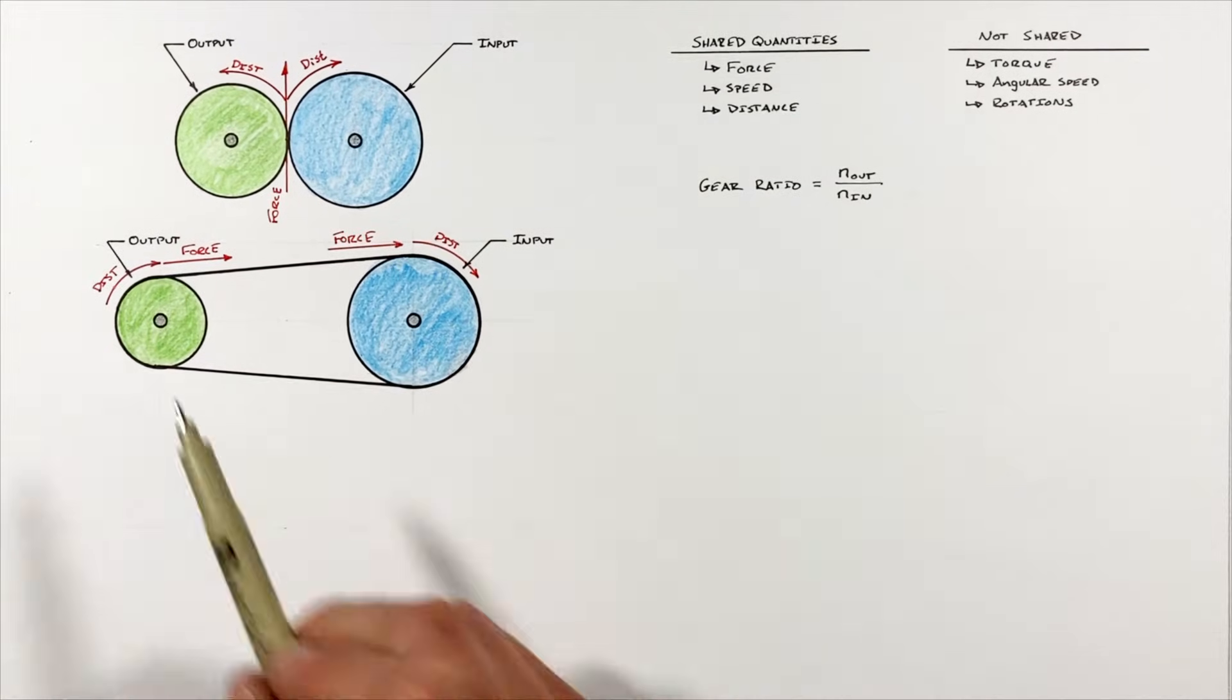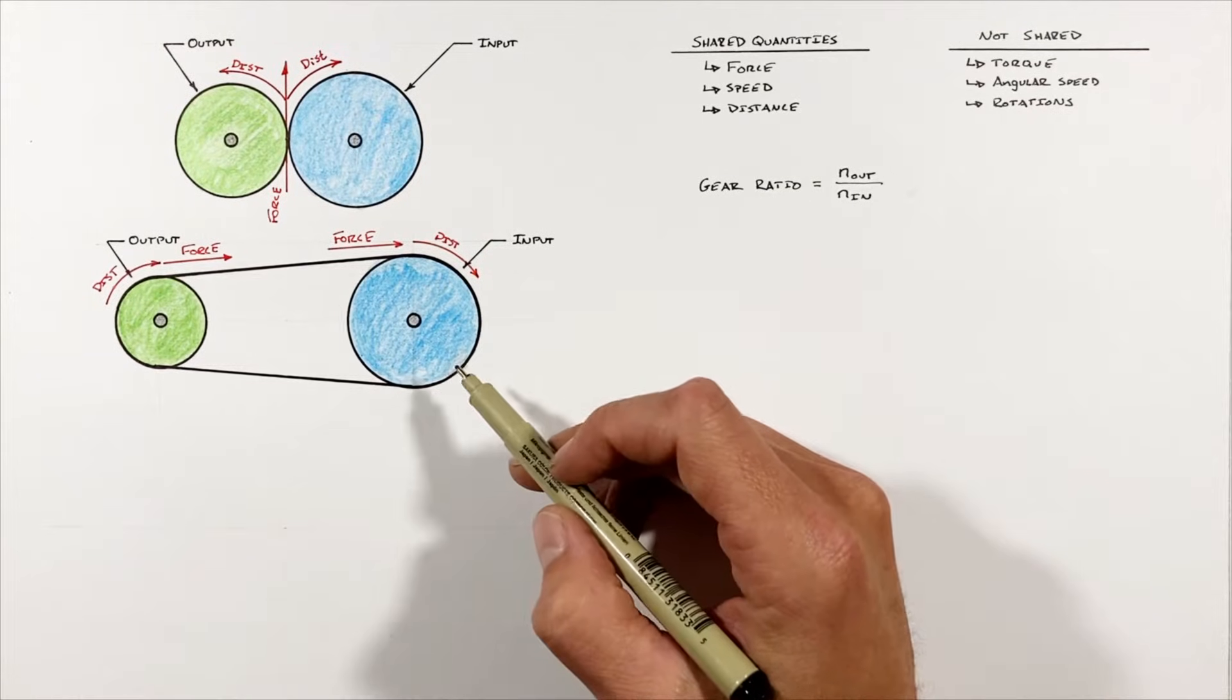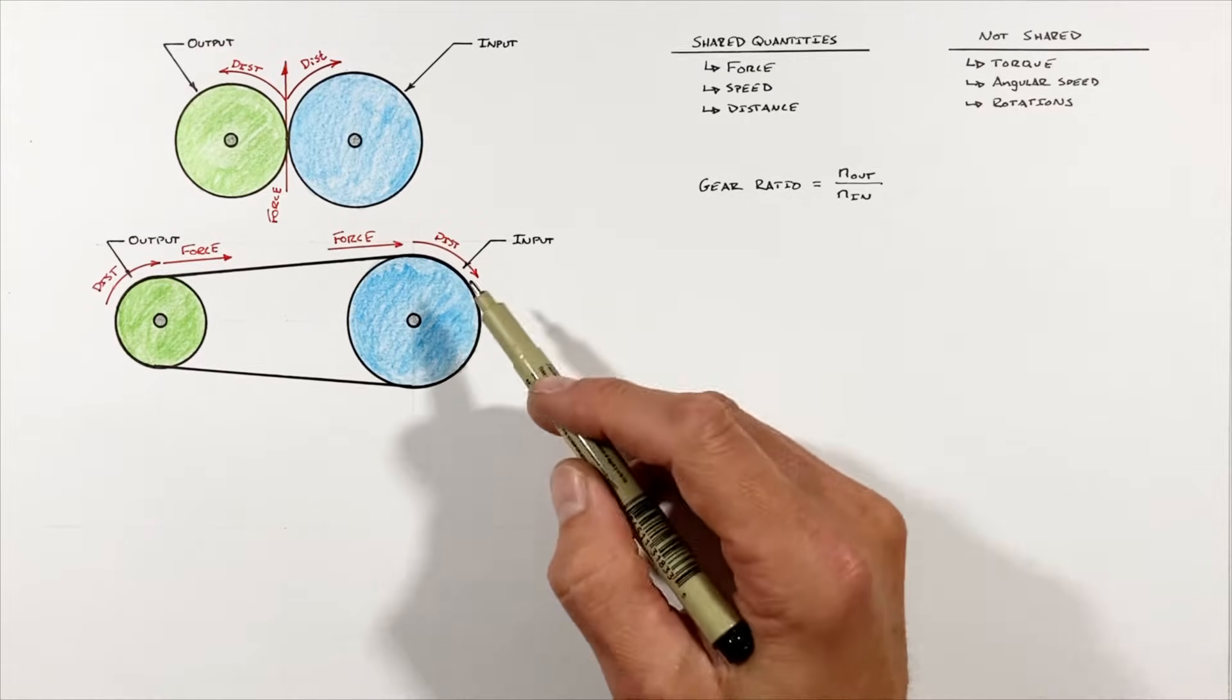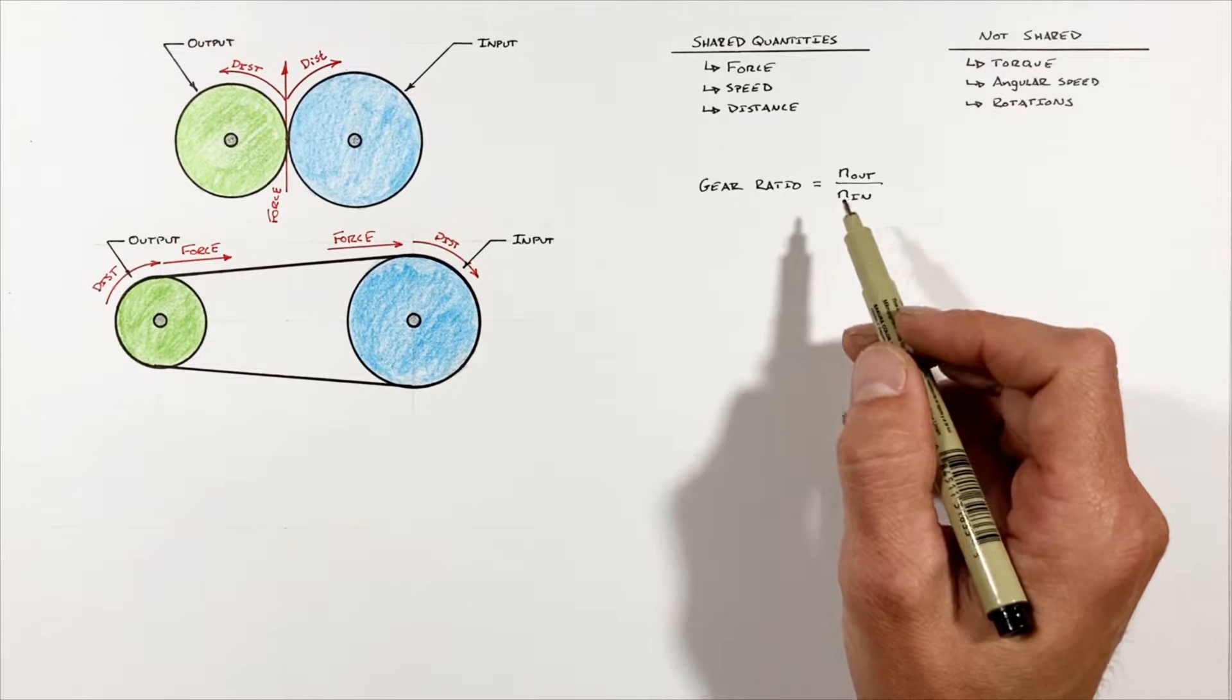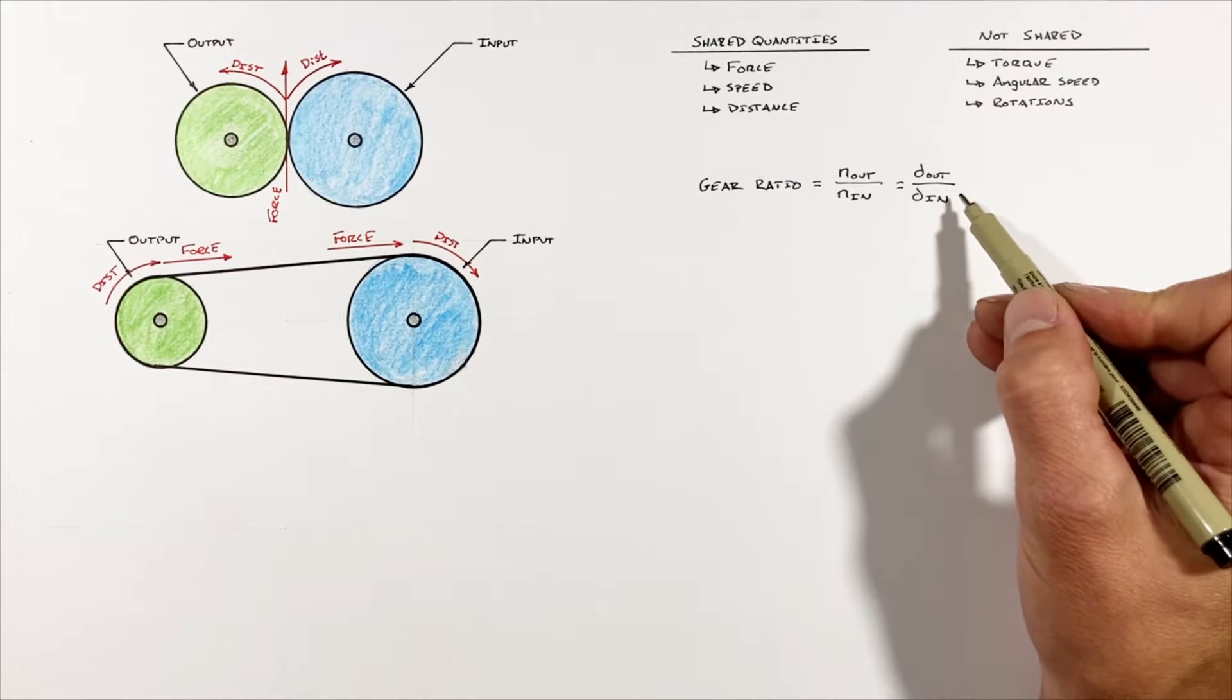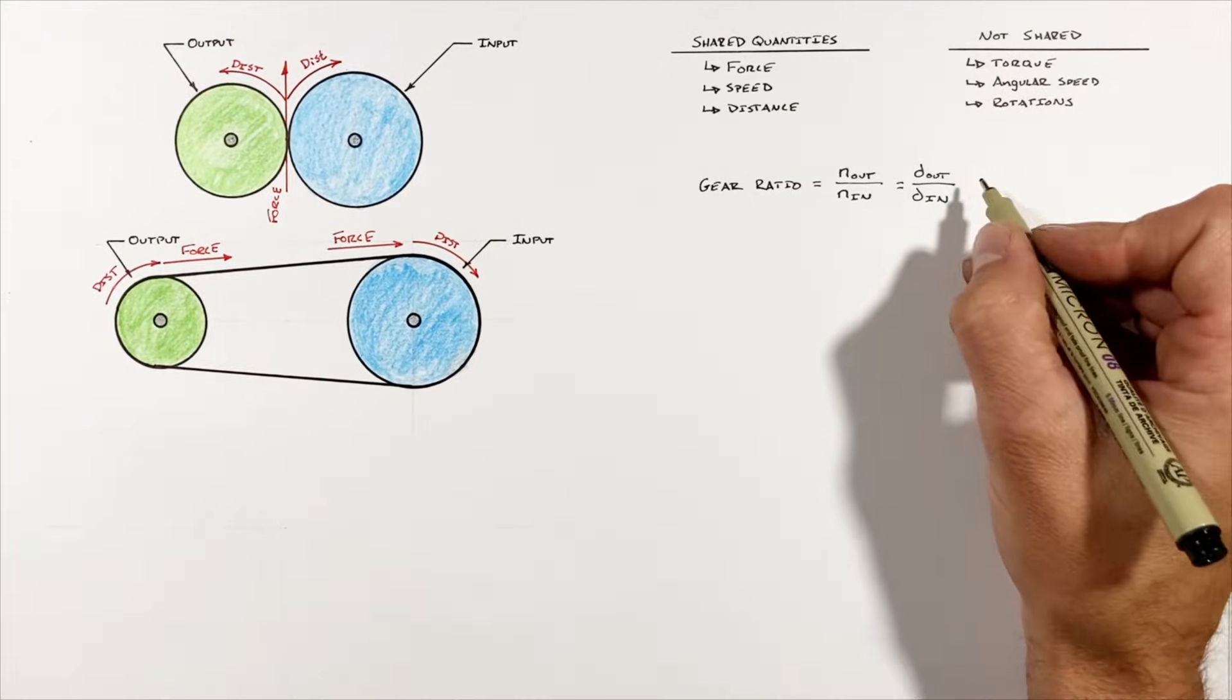Now in addition to sprockets and chains, we're also talking about pulleys and belts which are smooth. They have no gear teeth, but their motion can still be related using gear ratio. And to do that, we simply need to relate their diameters to one another. So we have diameter of the output pulley over diameter of the input pulley.